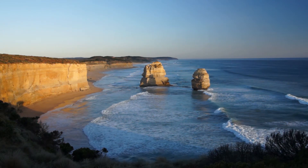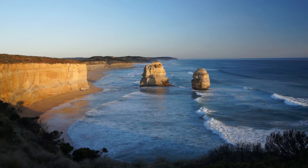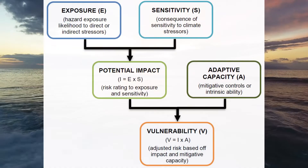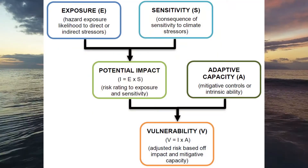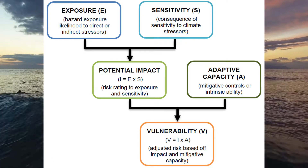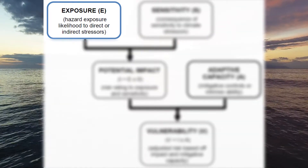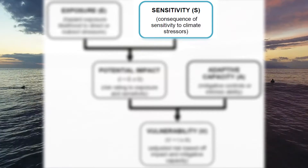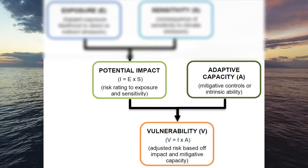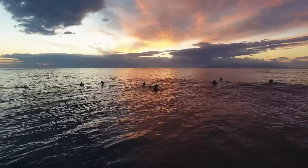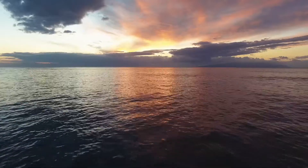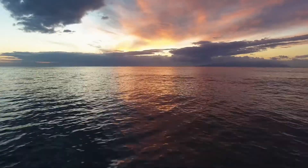An alternative broad scale approach that considers the entire coastline, termed a second pass assessment, is presented here. Using statewide spatial data, this approach considers exposure to the change, sensitivity to these changes, and factors that may help mitigate the potential impacts. Spatial Vision has adopted this approach to identify areas of the coast most likely to be impacted and be highly vulnerable to erosion.